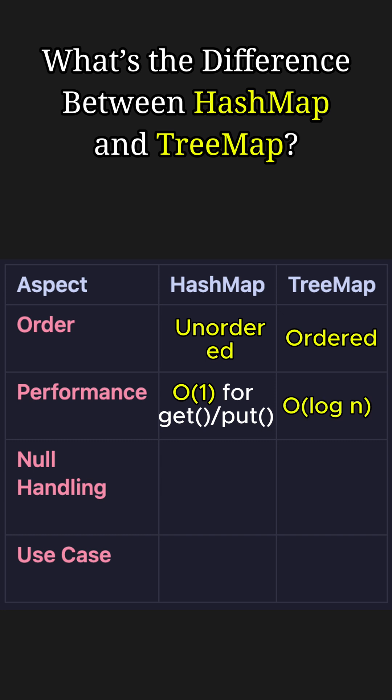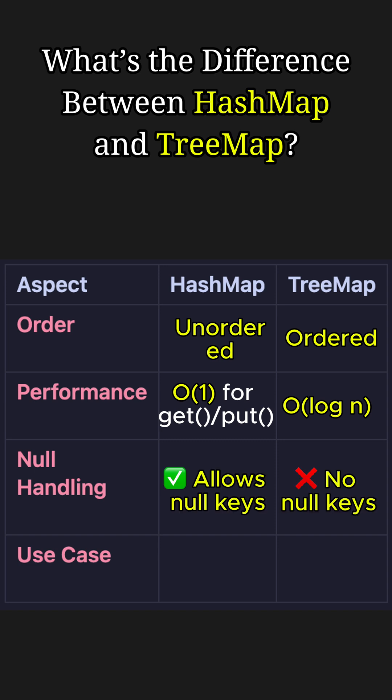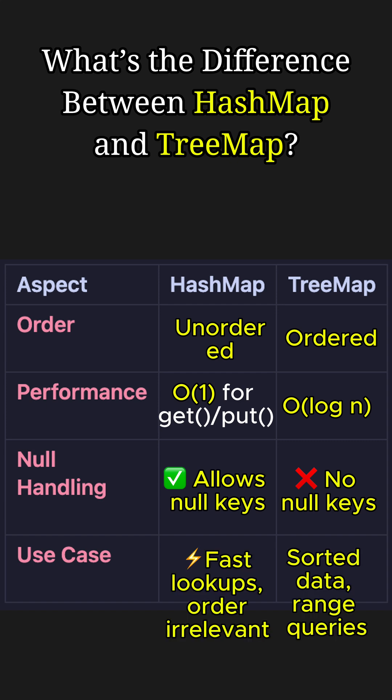The next point is null handling. HashMap allows nulls for both keys and values, while TreeMap does not allow null as a key but allows null as a value, because a null key would create a challenge in terms of ordering. Finally, for the use case: HashMap is good for unordered fast lookups, while TreeMap is used where sorted data is required.